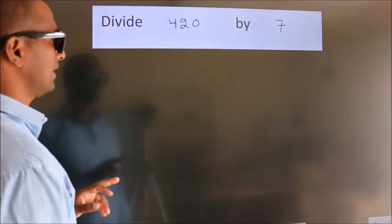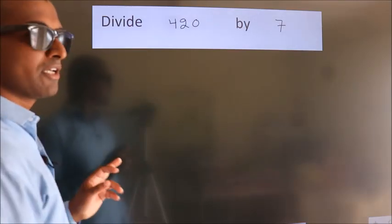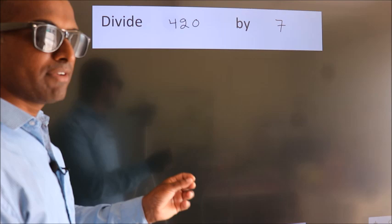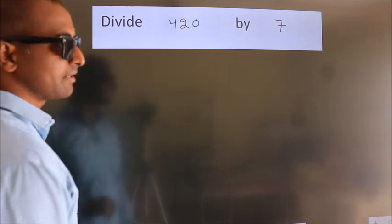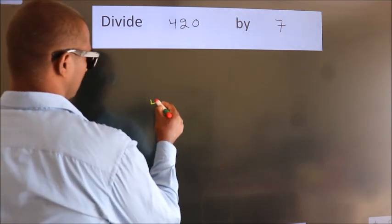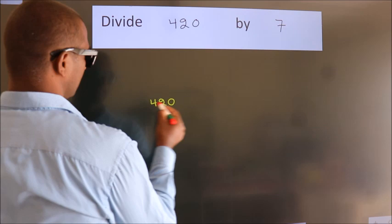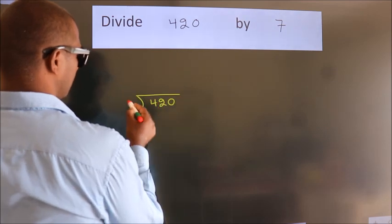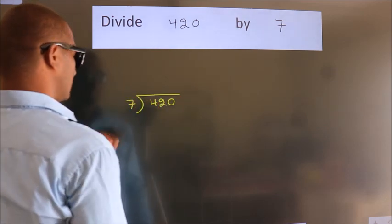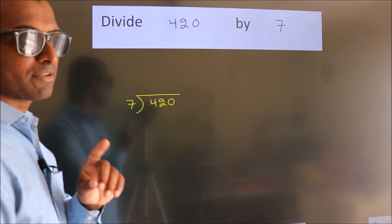Divide 420 by 7. To do this division, we should frame it in this way. 420 here, 7 here. This is your step 1.